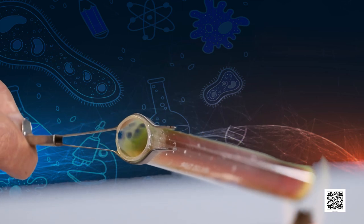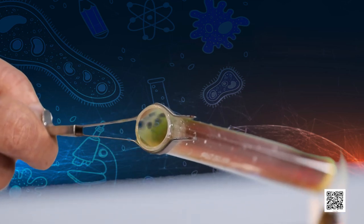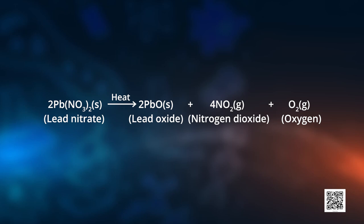These fumes are of nitrogen dioxide. Lead nitrate has decomposed into lead oxide, nitrogen dioxide, and oxygen. The balanced equation is: 2Pb(NO3)2 → 2PbO + 4NO2 + O2.